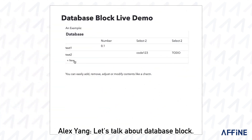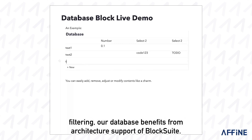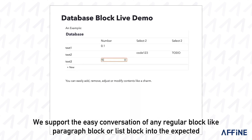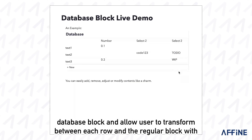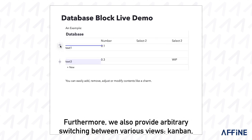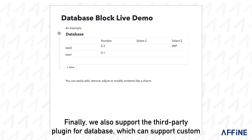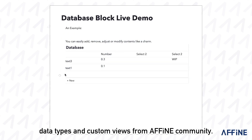Let's talk about database block. In addition to many basic functions of database products such as sorting and filtering, our database benefits from the architecture support of BlockSuite. We support the easy conversion of any regular block, like paragraph block or list block, into a database block, and allow users to transform between each row and regular block with the ability to save all column information in the whole workspace. Furthermore, we also provide arbitrary switching between various views: Kanban, timeline, schedule, list, and even more. Finally, we also support third-party plugins for the database, which can support custom data types and custom views from the AFFiNE community. Let's take a look.